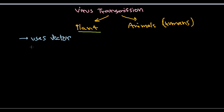Vectors can be insects, vectors can be mites, it can be nematodes, worm-like organisms, and also fungi.